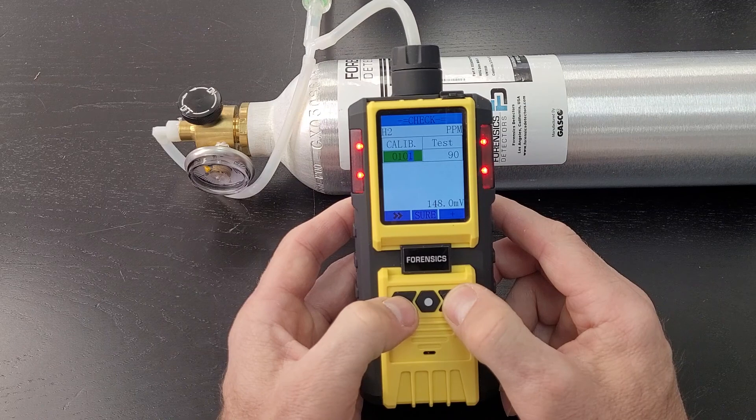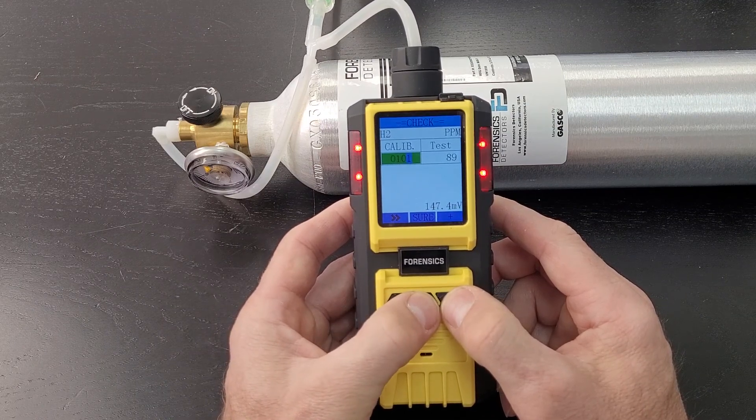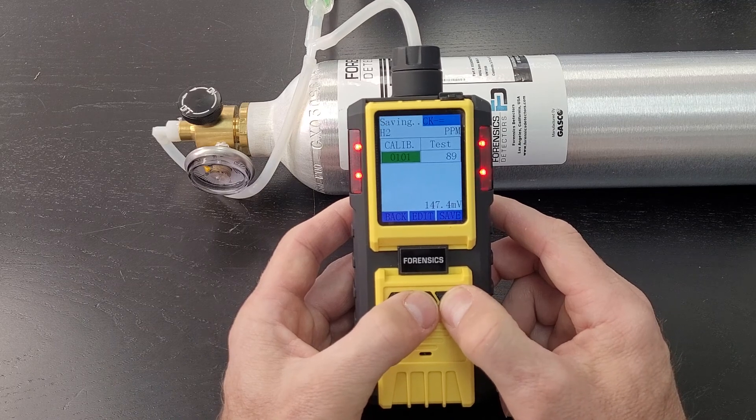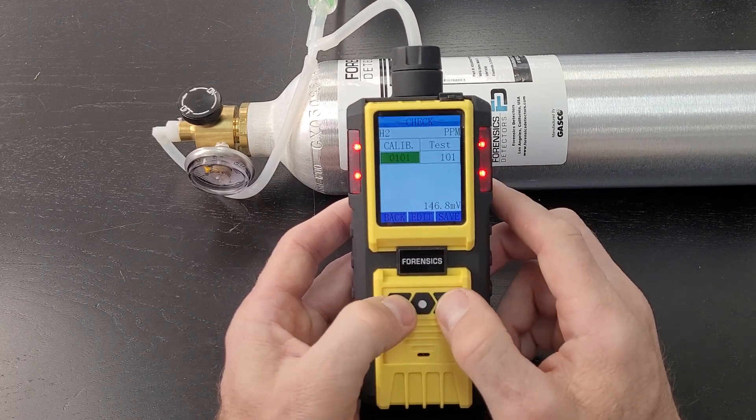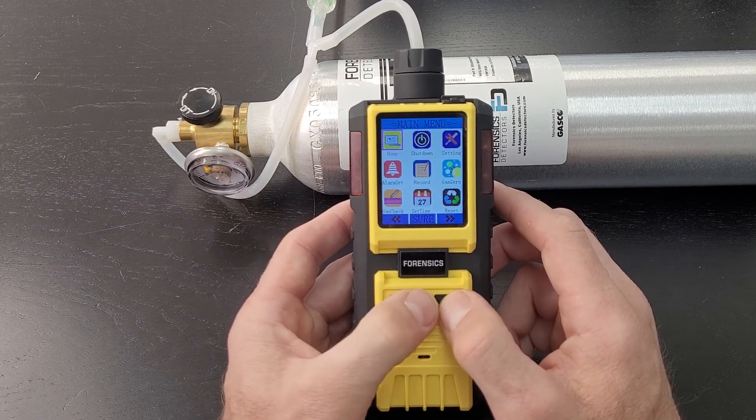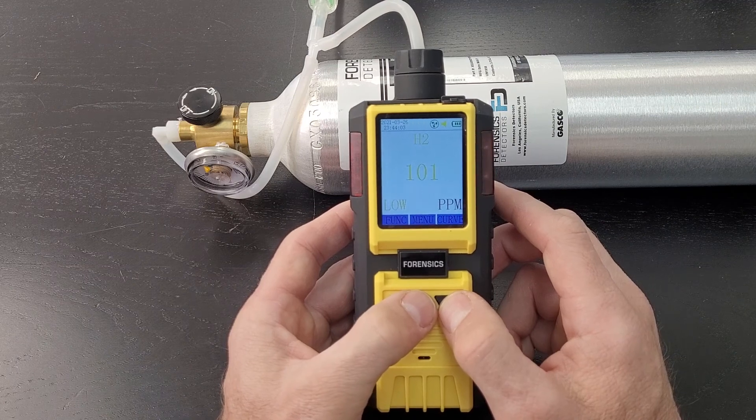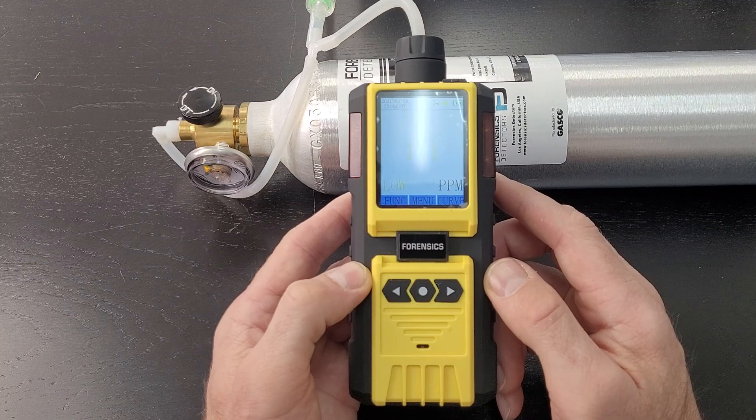Press edit, go across, change the digits to the concentration of your gas. In this case, as you well know, it's 101. Let's keep going across, press sure, save - it is done. You can see that we go back to the main menu, and it's going to be 101 or hovering around there. There you see it. Congratulations, you have calibrated your gas analyzer Model 600.